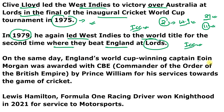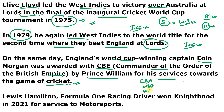Also remember Eoin Morgan. England's World Cup winning captain Eoin Morgan was awarded the CBE — Commander of the Order of the British Empire — by Prince William for his services to cricket. There are three awards in this hierarchy: CBE is the highest, followed by OBE (Officer of the Order of the British Empire), and then MBE (Member of the Order of the British Empire).